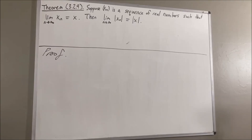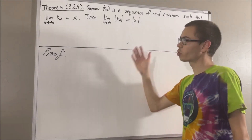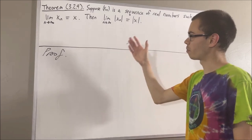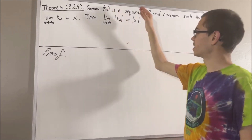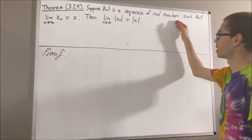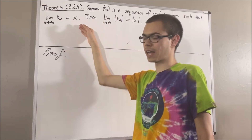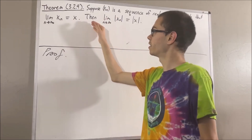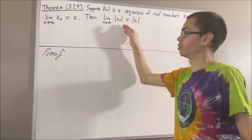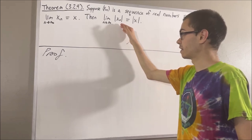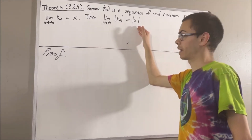Hello! In this video, we are going to prove the following theorem. Suppose xn is a sequence of real numbers that converges to the value x. Then, the sequence of absolute values of xn converges to the absolute value of x.